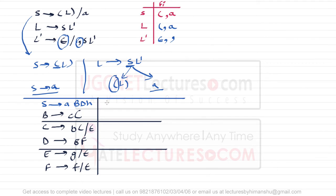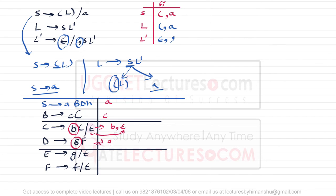The First of S is small-a only. The First of B is small-c, since it starts with a terminal. The First of C is small-b or epsilon, because epsilon is present and the other production begins with terminal small-b. For the First of D, it depends on E — whatever the First of E is will also contribute to the First of D. E can be replaced by g or epsilon, so we check the First of F if E goes to epsilon.